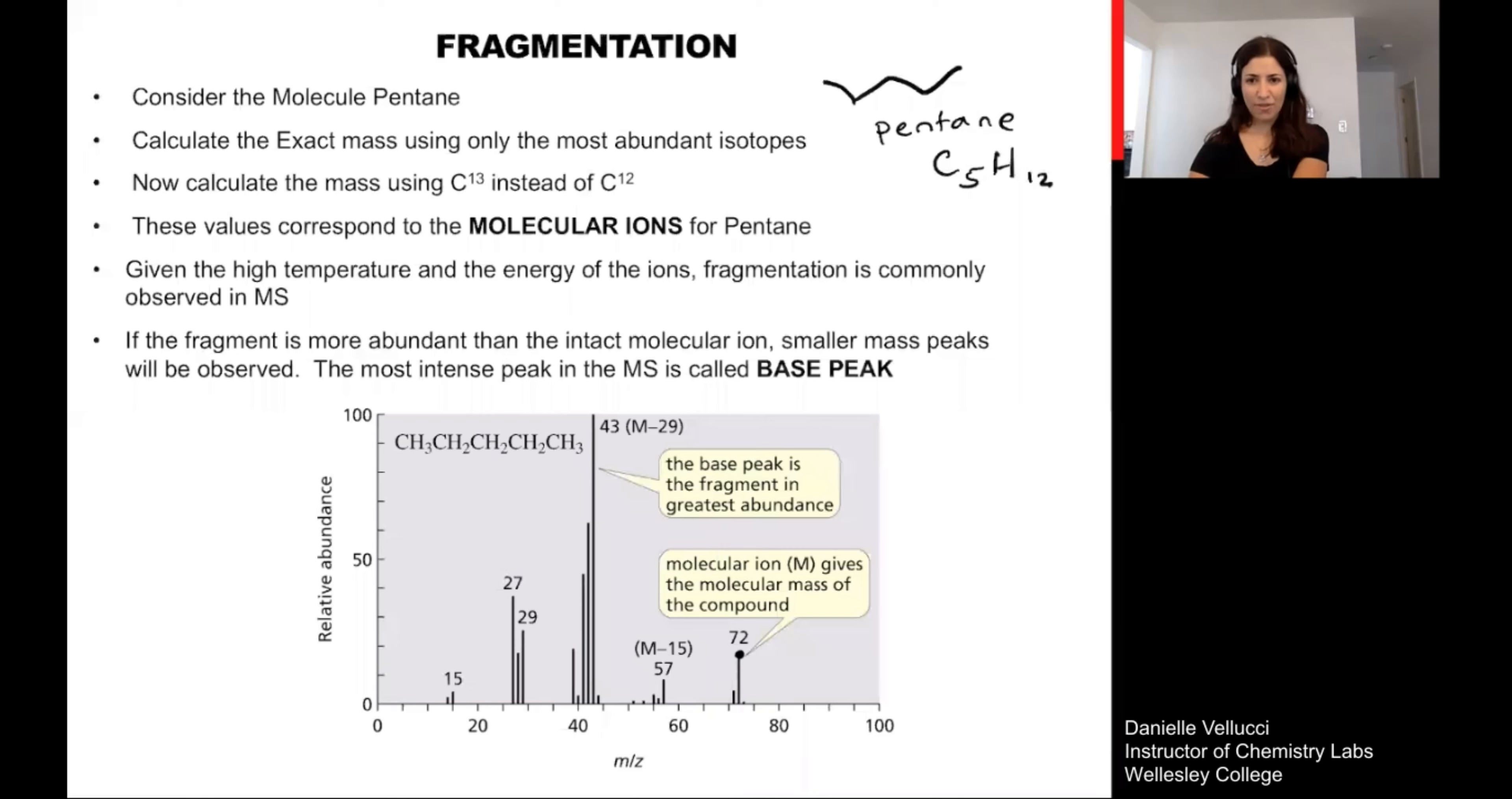Remember that the most abundant signal we're going to see associated with pentane is going to come from 12 times five because that is the most abundant isotope of carbon. And then 12 times one, because we always use one for hydrogen. That's how we get our 72. Again, we call this major signal calculated by the most abundant isotope at each atom, the molecular ion. So this represents the molecular ion of pentane.